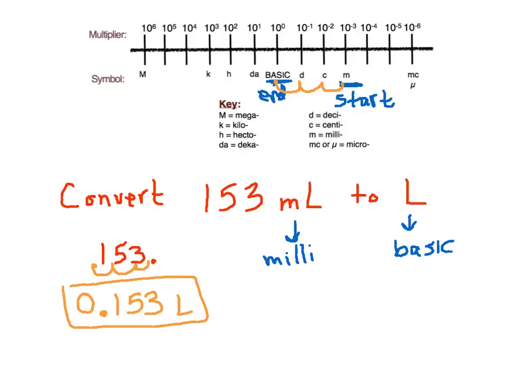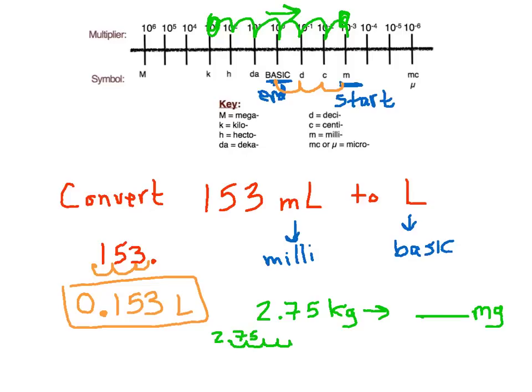Let's do another quick one. Let's do 2.75 kilograms and convert that to some amount of milligrams. So we're starting here at kilograms. This is our starting point. And we're ending over here at milligrams. So we're moving 1, 2, 3, 4, 5, 6 to the right. So that's how the decimal point should move, 2.75. We're going to move it 1, 2, 3, 4, 5, 6.